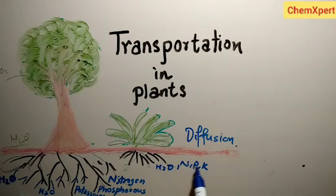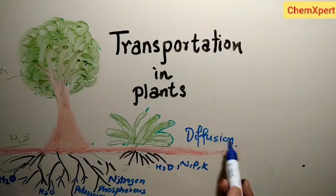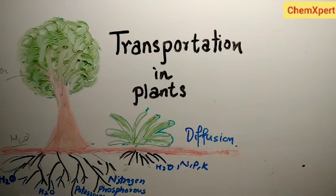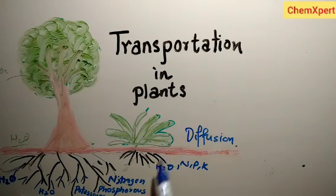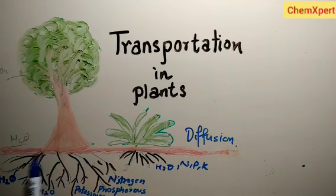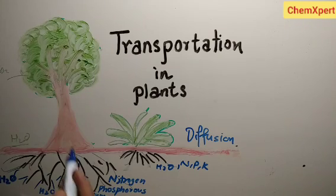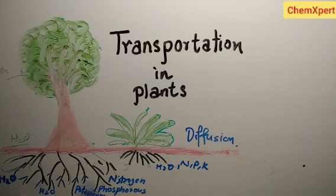In small plants, materials do not take long to reach, and this process takes place through diffusion. Diffusion is simple intermixing — for example, if we add a drop of ink in water, it spreads. In small plants, water easily travels through the diffusion process, but in the case of taller plants, diffusion is not sufficient to provide all the nutrient material.